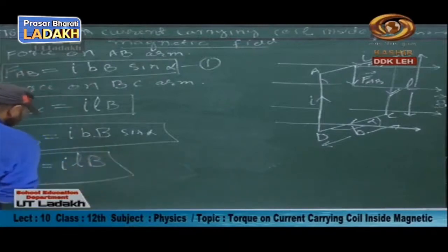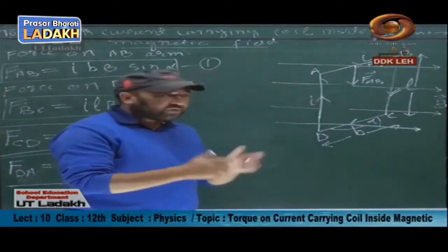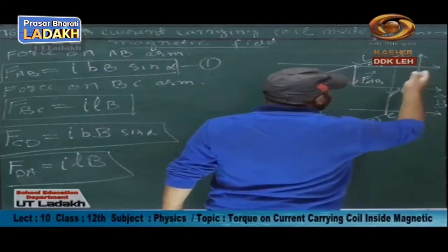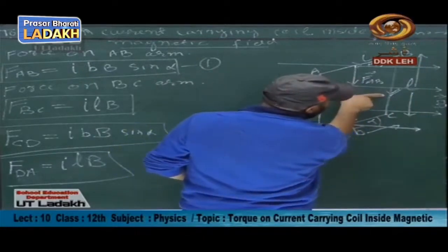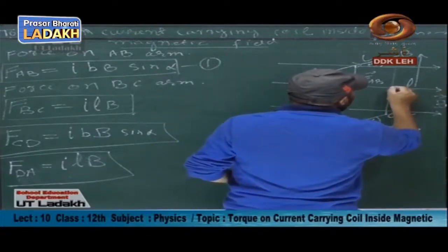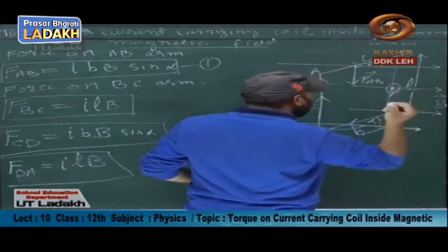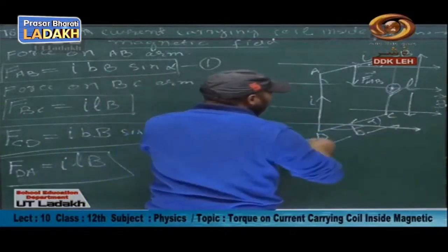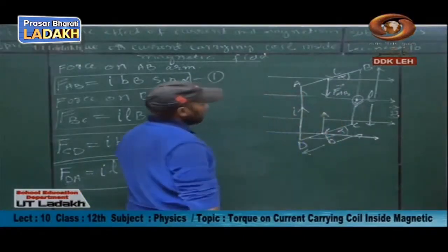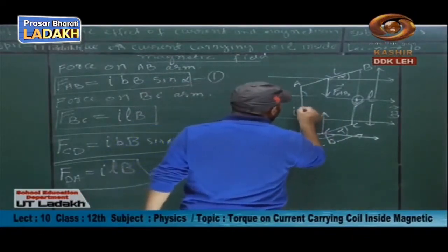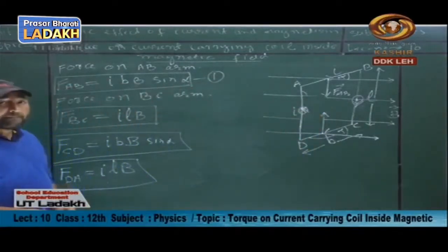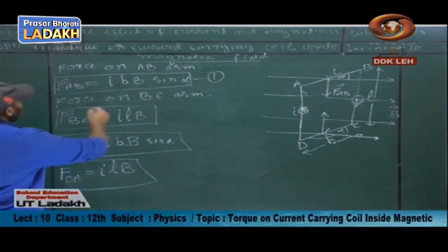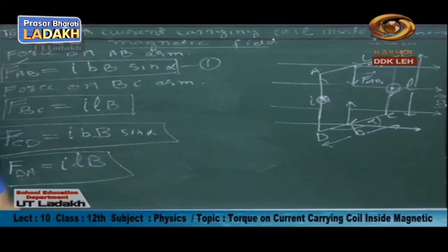We also calculate the force on arm DA. Looking at the directions: the force on AB and the force on CD have the same magnitude, IBL sin α, but are opposite in direction. Hence these two forces cancel each other.